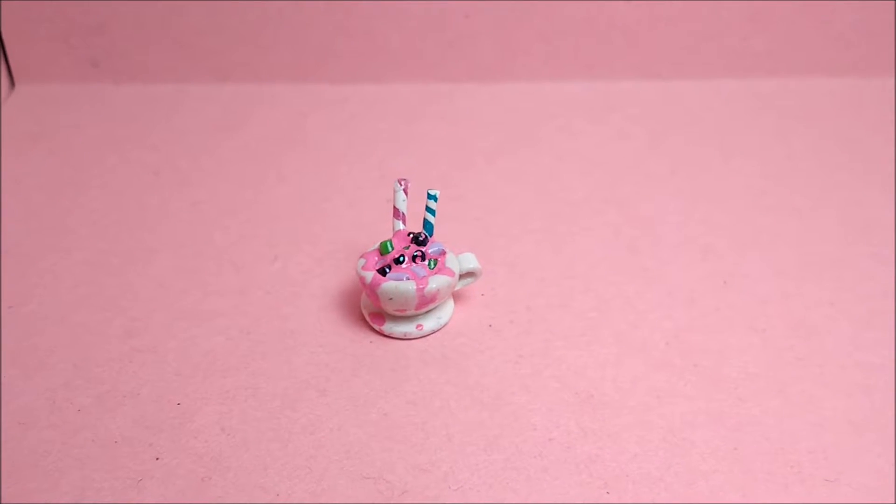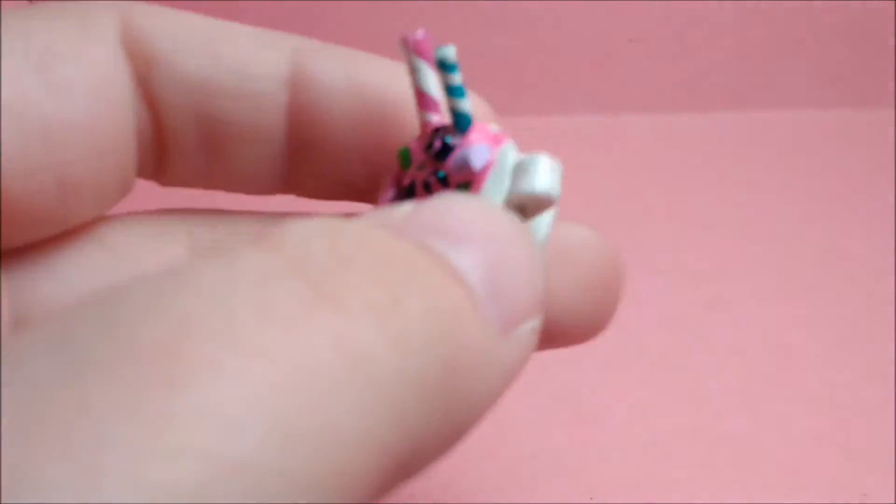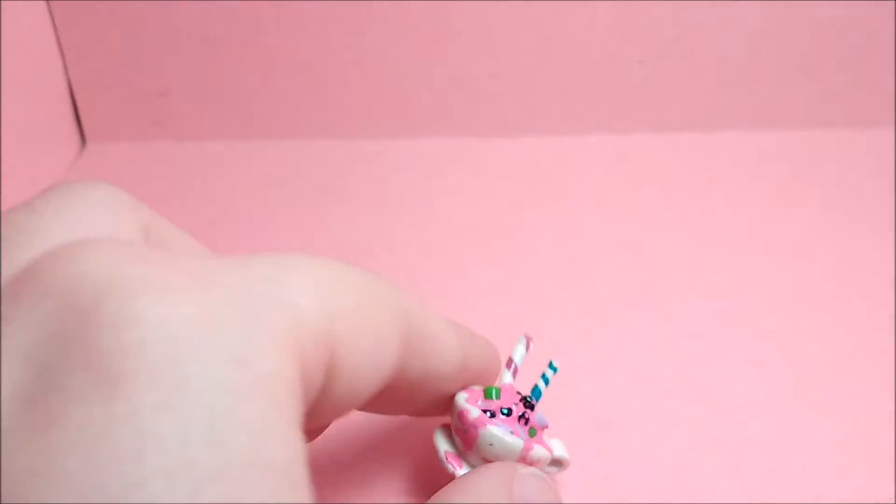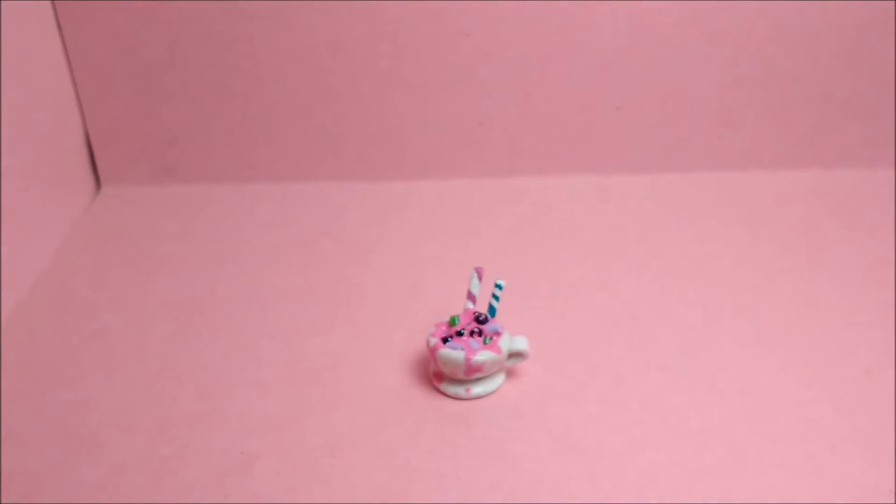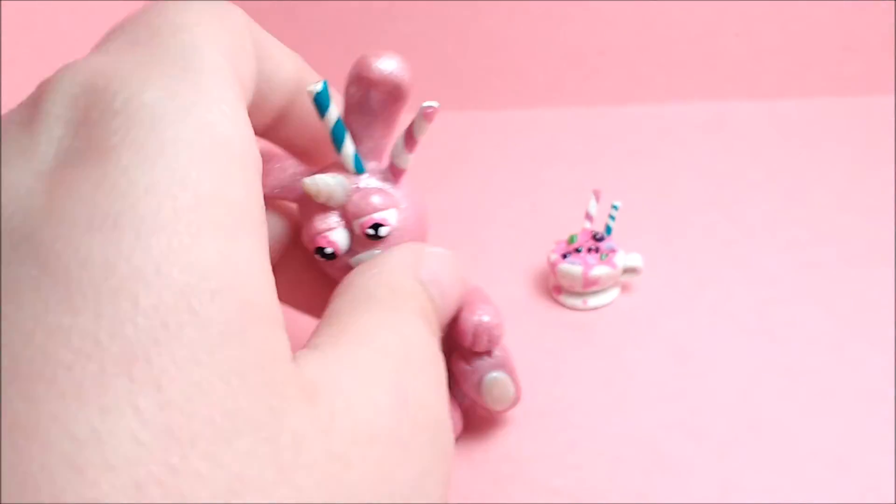Now I didn't add an eye screw or eye pin to this, but you can to make it into a pendant or whatever you'd like. Put it on a bracelet, necklace, etc. But I made it just like it is, just a sculpture because I also made this, but this is not in the tutorial.